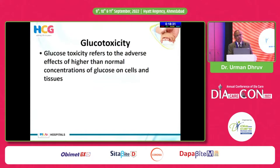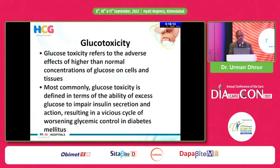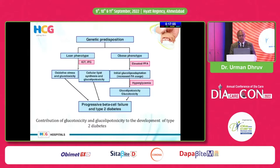So what is glucotoxicity? Ideally, glucotoxicity refers to the adverse effects of higher than normal concentration of glucose on cells and tissues — that includes all cells and all tissues of the body. However, of late the definition has been restricted to the ability of excess glucose to impair insulin secretion and action, resulting in a vicious cycle of worsening glycemic control in diabetes mellitus.